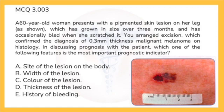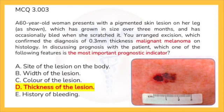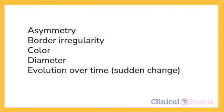Next: a 60-year-old woman presents with a pigmented skin lesion on her leg that has grown in size over three months and has occasionally bled when scratched. Excision confirmed a 0.3 mm thickness malignant melanoma on histology. In discussing prognosis, which feature is the most important prognostic indicator? A: site of lesion. B: width. C: color. D: thickness. E: history of bleeding. The most important prognostic indicator in malignant melanoma is thickness of the lesion — D is correct. The rest are not prognostically significant. Remember the ABCDE of melanoma: asymmetry, border irregularity, color, diameter, and evolution over time.